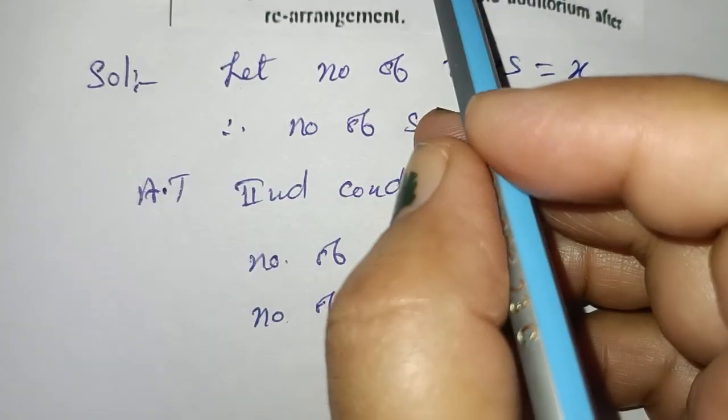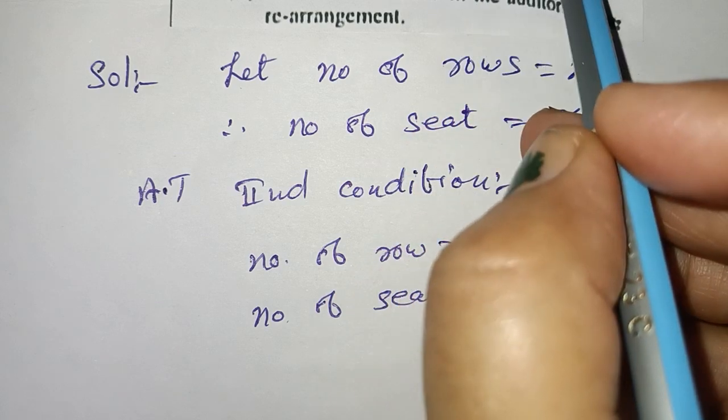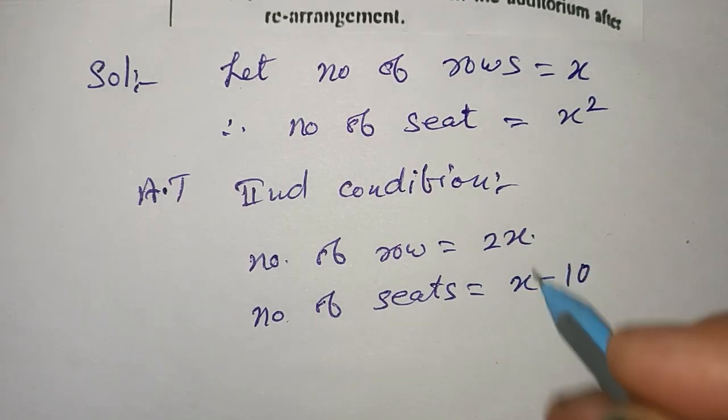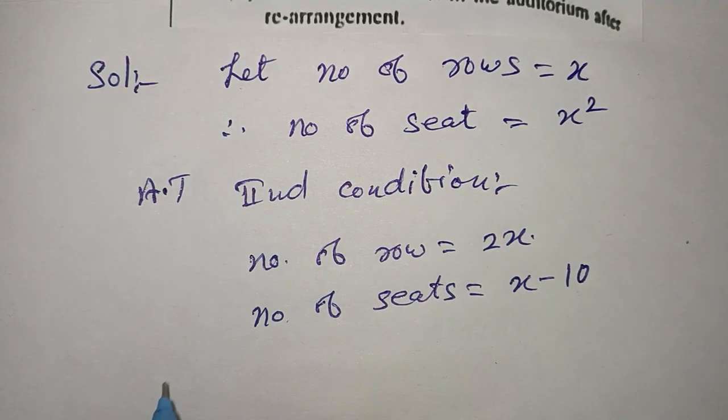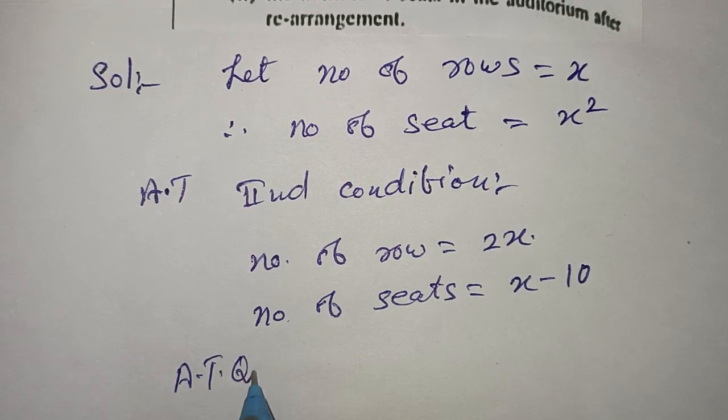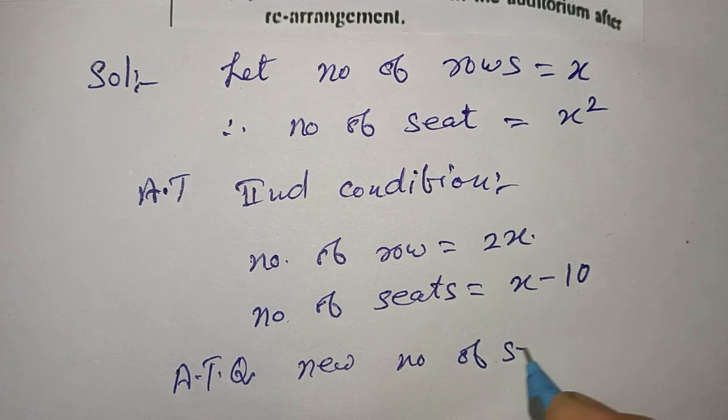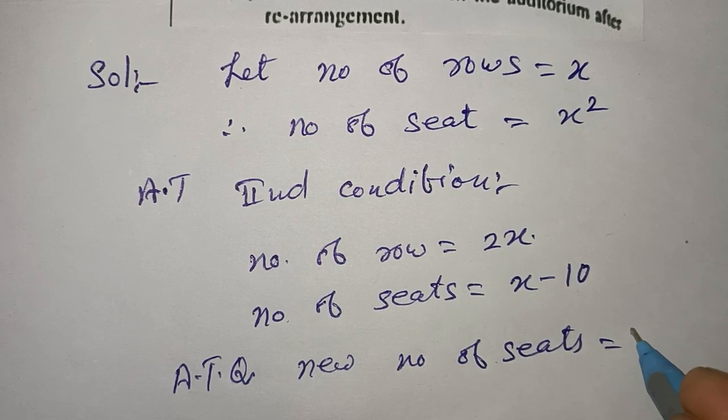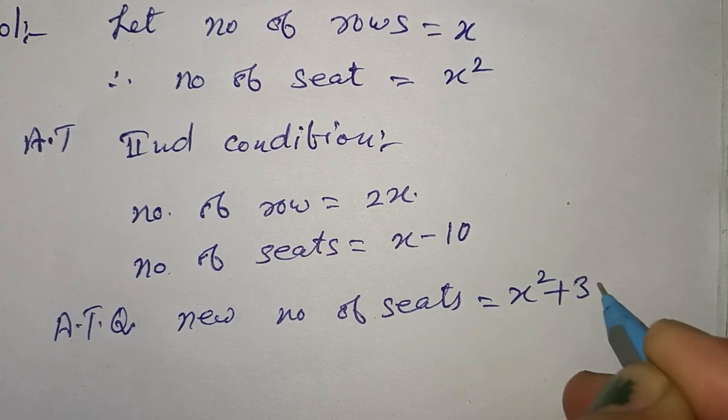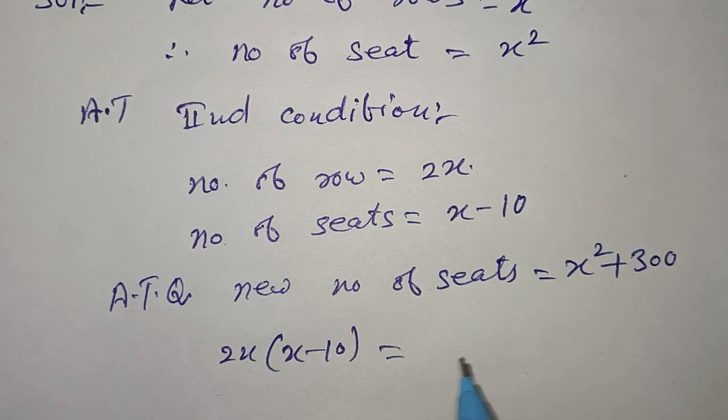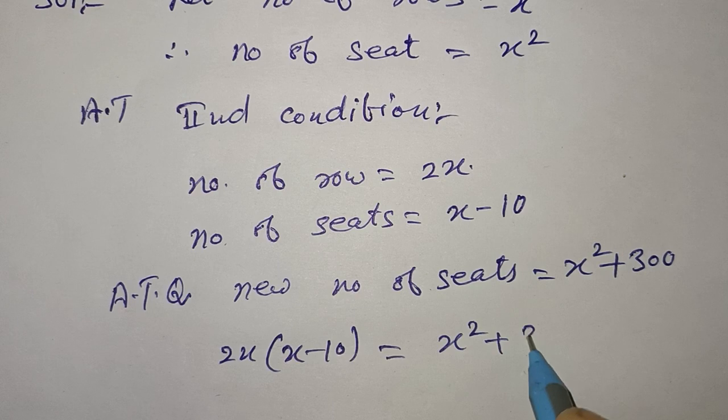The total number of seats increased by 300. According to question, new number of seats = x² plus 300. This into this equals this: 2x into (x minus 10) = x² plus 300.